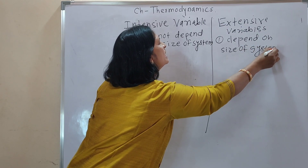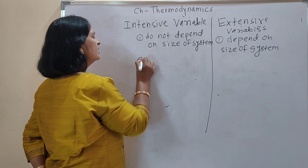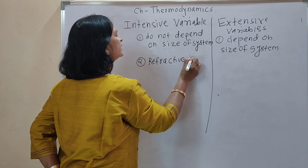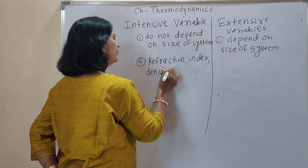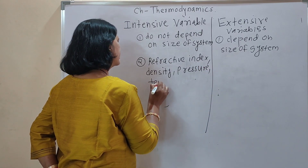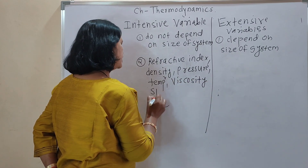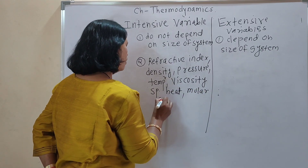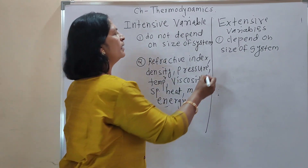Extensive variables depend on the size of the system. Examples of intensive variables are: refractive index, density, pressure, temperature, viscosity, specific heat, and molar energy — all are examples of intensive variables.